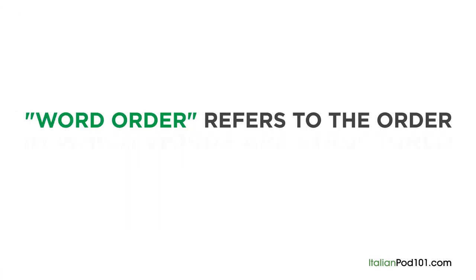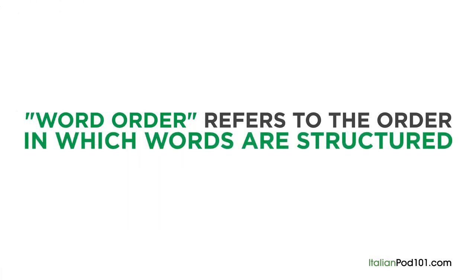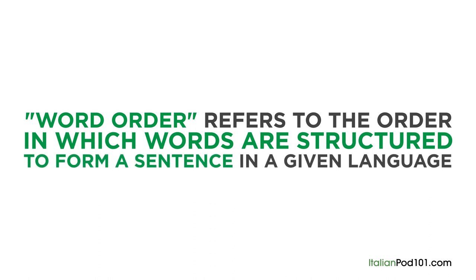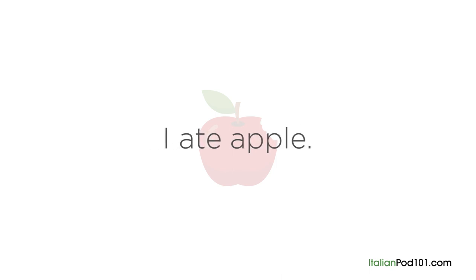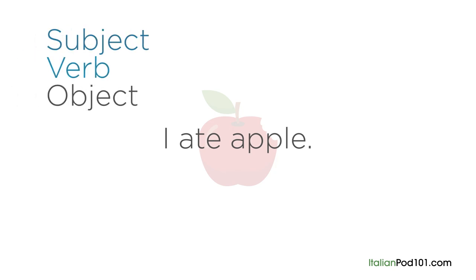Word order refers to the order in which words are structured to form a sentence in a given language. Consider the English sentence, 'I ate an apple.' Let's remove the article for simplicity, so we're just left with 'I ate apple.' The basic word order for English is subject, verb, object, or SVO for short.